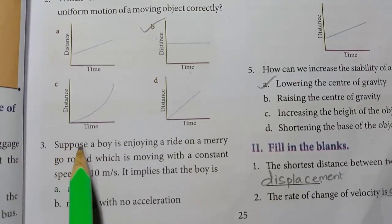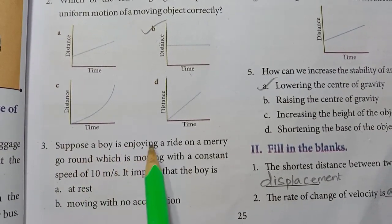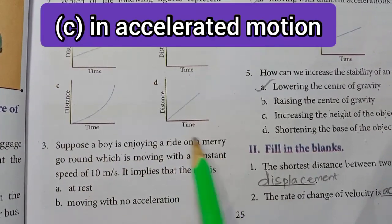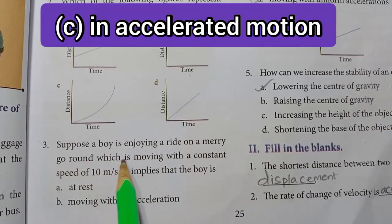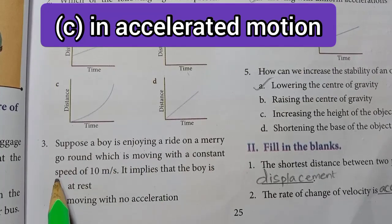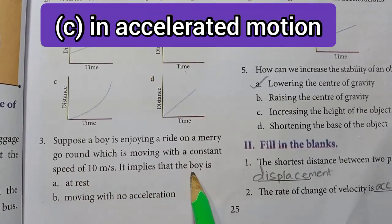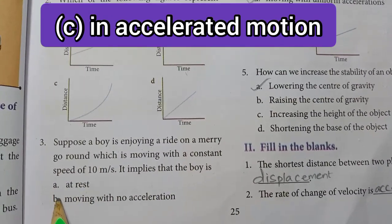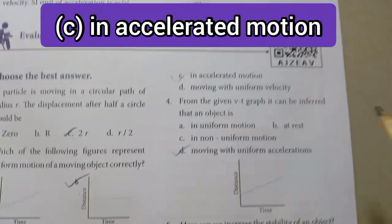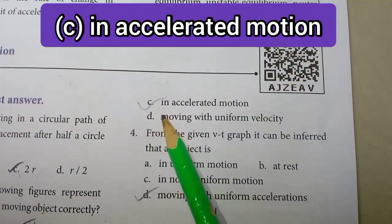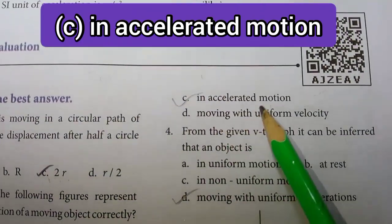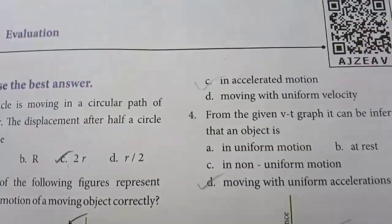3rd one — suppose a boy is enjoying a ride on a merry-go-round which is moving with a constant speed of 10 metres per second; it implies that the boy is in option C: accelerated motion.